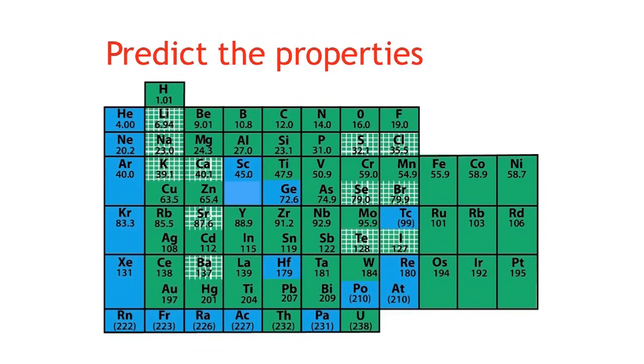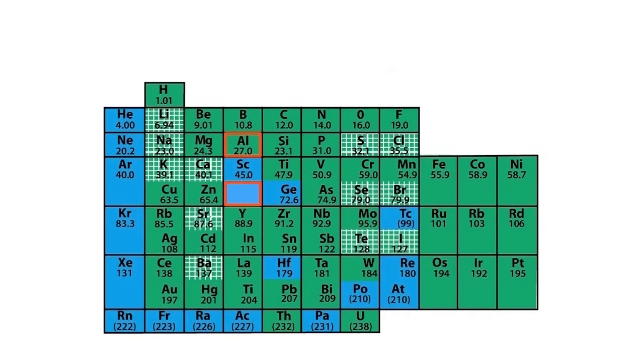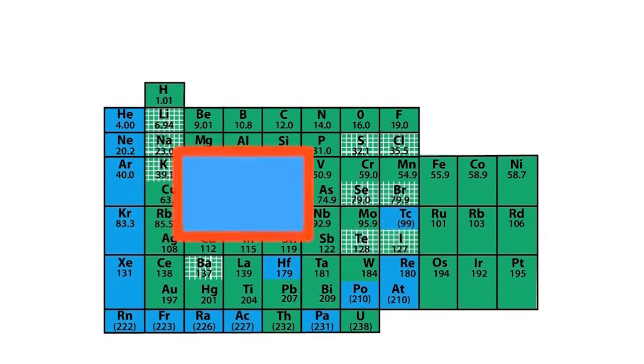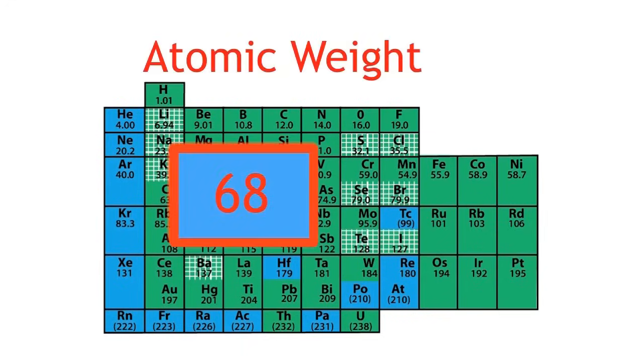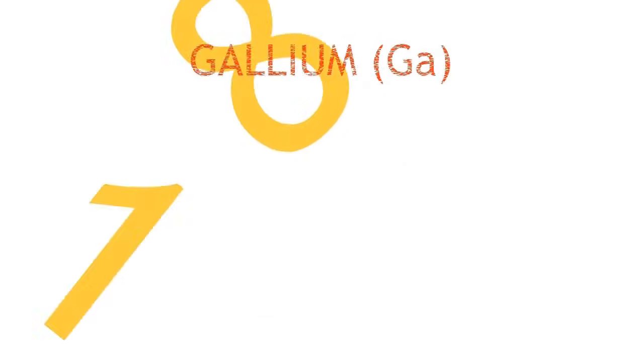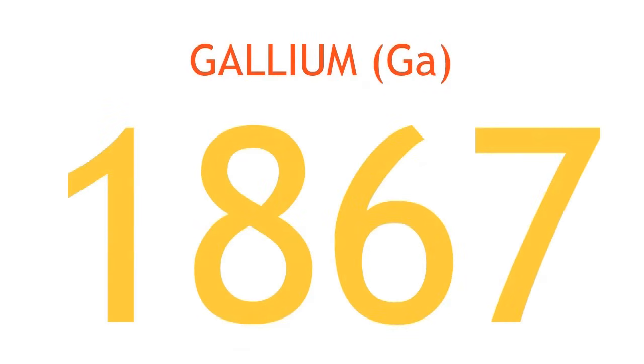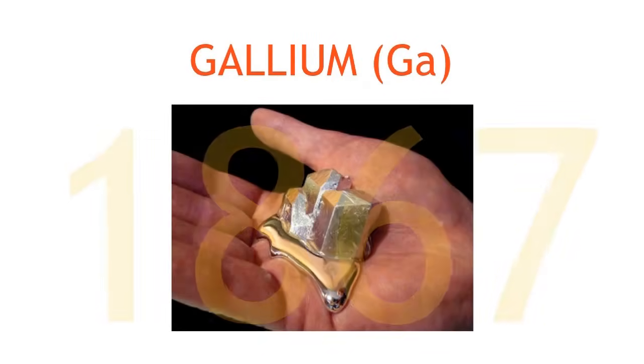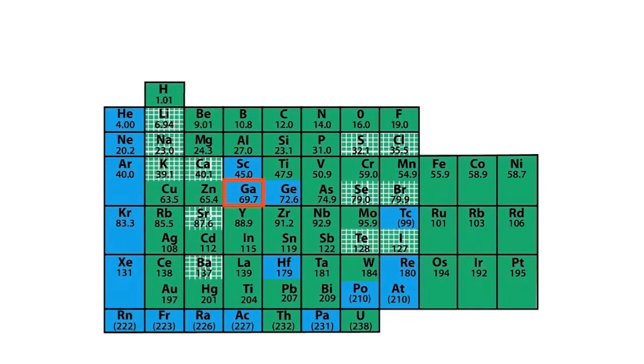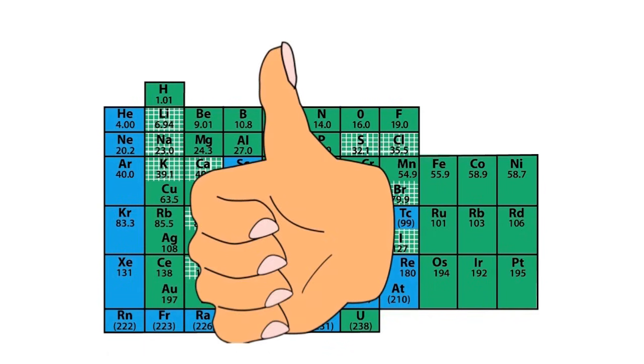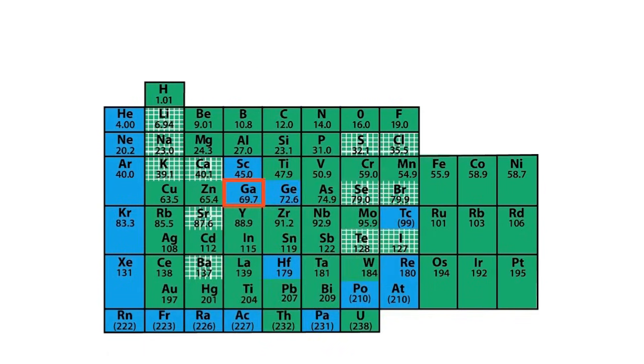And as more and more elements were discovered, his tables went through many redrafts. One of the gaps in Mendeleev's table was found below aluminum. He predicted the properties of this mystery element and that it would have an atomic weight of around 68. In 1875, gallium was discovered, the mystery element. Mendeleev's predicted properties matched this new element's properties almost exactly, marking a turning point in the world of chemistry. His table started to become widely accepted.